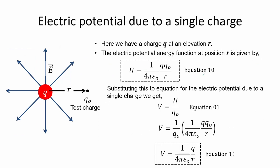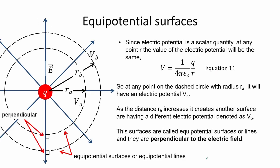Let us examine the electric potential due to a single charge. Here we have a charge Q producing an electric field going radially outward. The electric potential energy at position R with a test charge Q₀ is given by equation 10. Substituting this into the equation for electric potential due to a single charge, we get the expression shown in equation 11. Since electric potential is a scalar quantity, at any point R the value will be the same. At any point on the dashed circle with radius R_A it has electric potential V_A. As distance R_B increases it creates another surface with a different electric potential V_B — these are called equipotential surfaces or lines, which are perpendicular to the electric field.